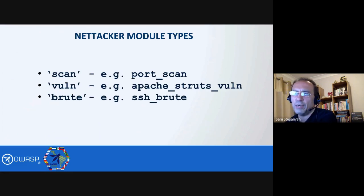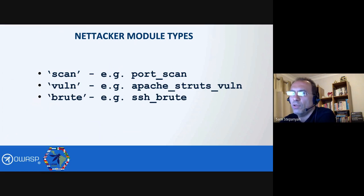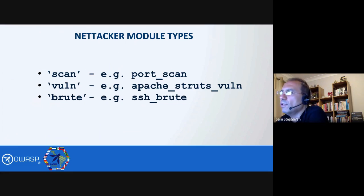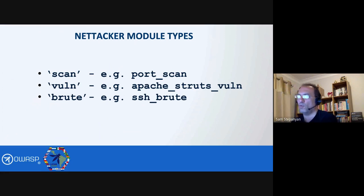When I first launched Nettacker, there was lots of information displayed on the screen and I couldn't figure out what it was. Let me break it down: Nettacker has modules — Swiss Army knife blades — and there are only three types. It has a module of type scan, for example a port scanning module. It has a module of type vuln, for example Apache Struts vuln — a module that looks for a specific vulnerability on the target. And it has a module of type brute for brute forcing — for example, SSH brute will allow you to perform brute forcing over the SSH protocol. That's all you need to know: three module types.